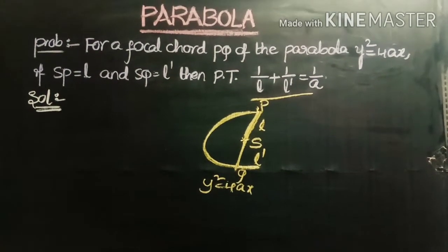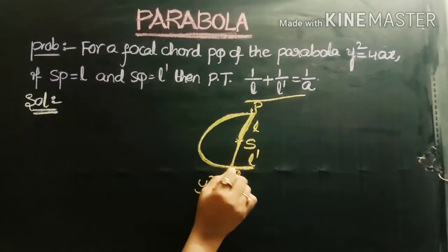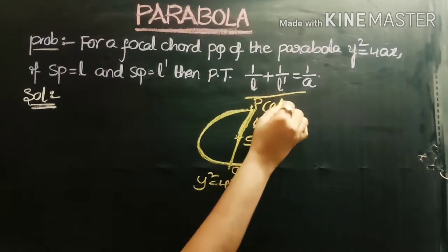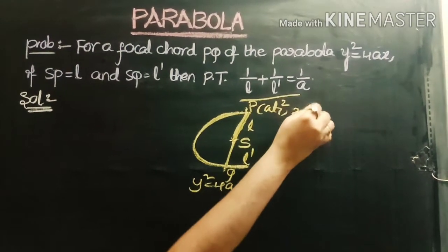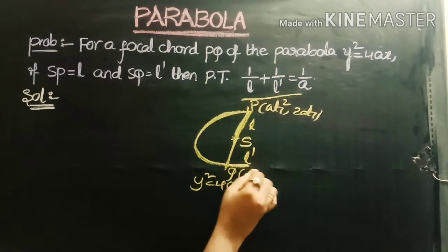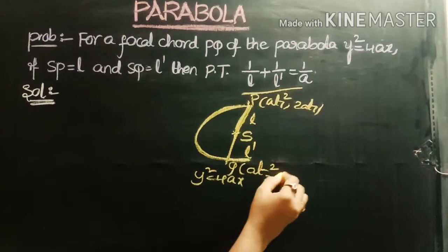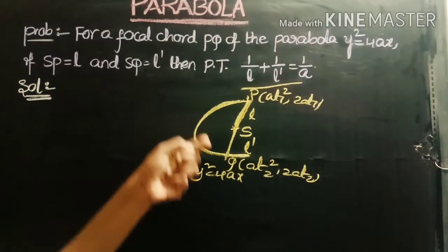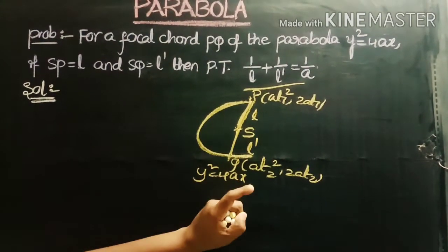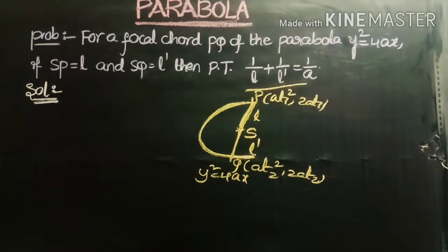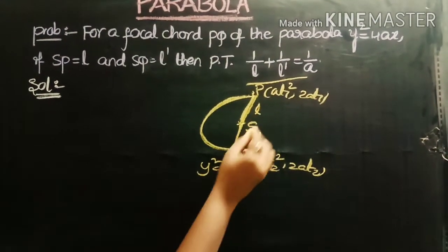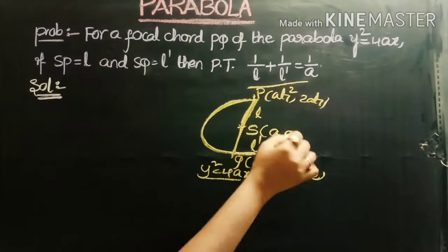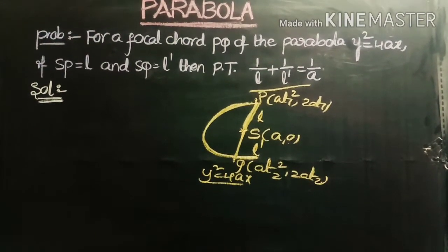Since P and Q are points on the parabola, we take those two points in parametric form as (aT1², 2aT1) and (aT2², 2aT2). Any point on the parabola y² = 4ax can be written in the form (at², 2at). Also, the focus of the parabola y² = 4ax is S = (a, 0).